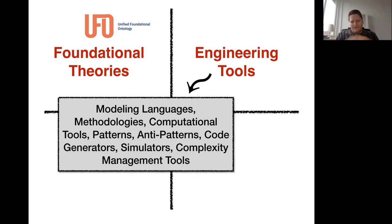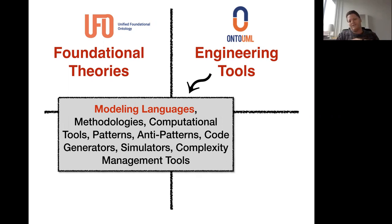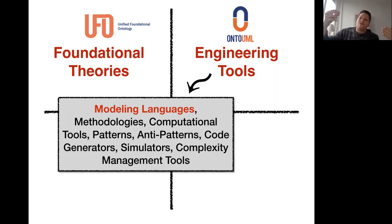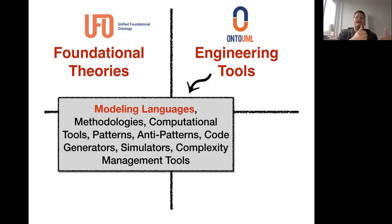In particular, what I'll be talking about today will be centered around a modeling language called OntoUML — an ontologically well-founded version of UML — in the sense that the modeling primitives of this language reflect the ontological distinctions put forth by this ontology, and formal constraints are added to the grammar such that you can only build models conformant with the axiomatization of the underlying ontology.